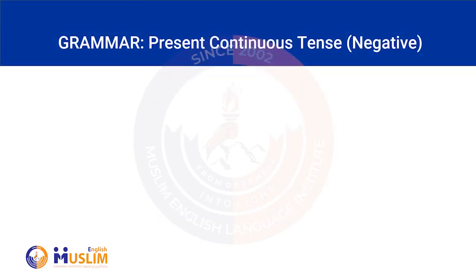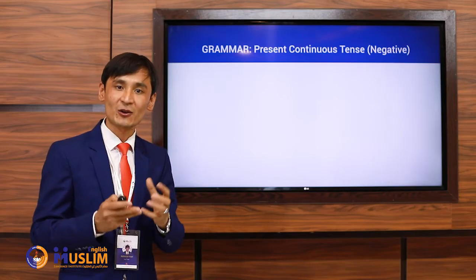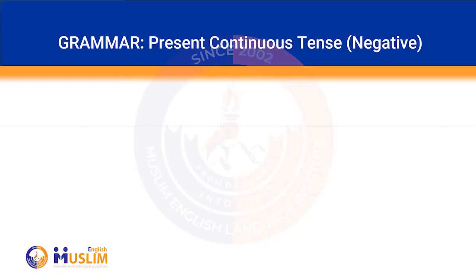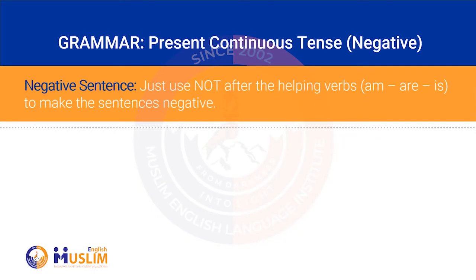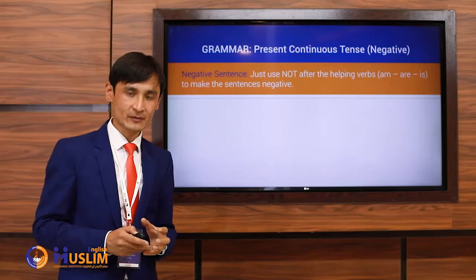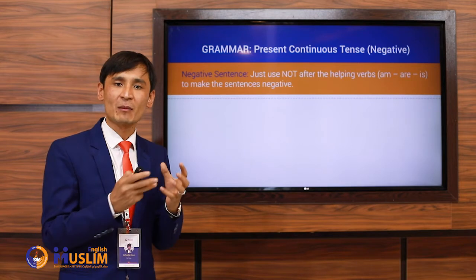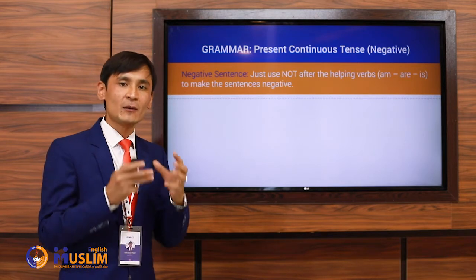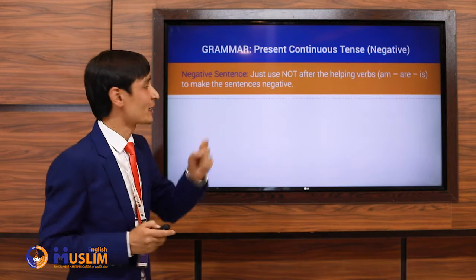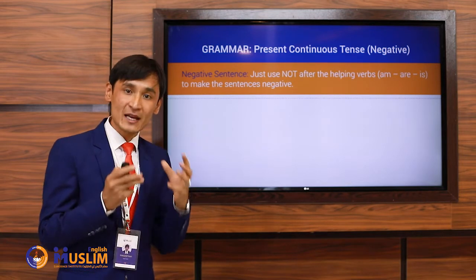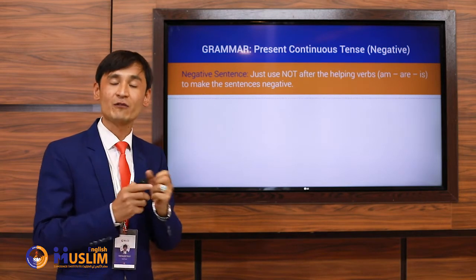Present Continuous negative sentences. To make the sentence negative, just use NOT after the helping verbs am, are, or is.